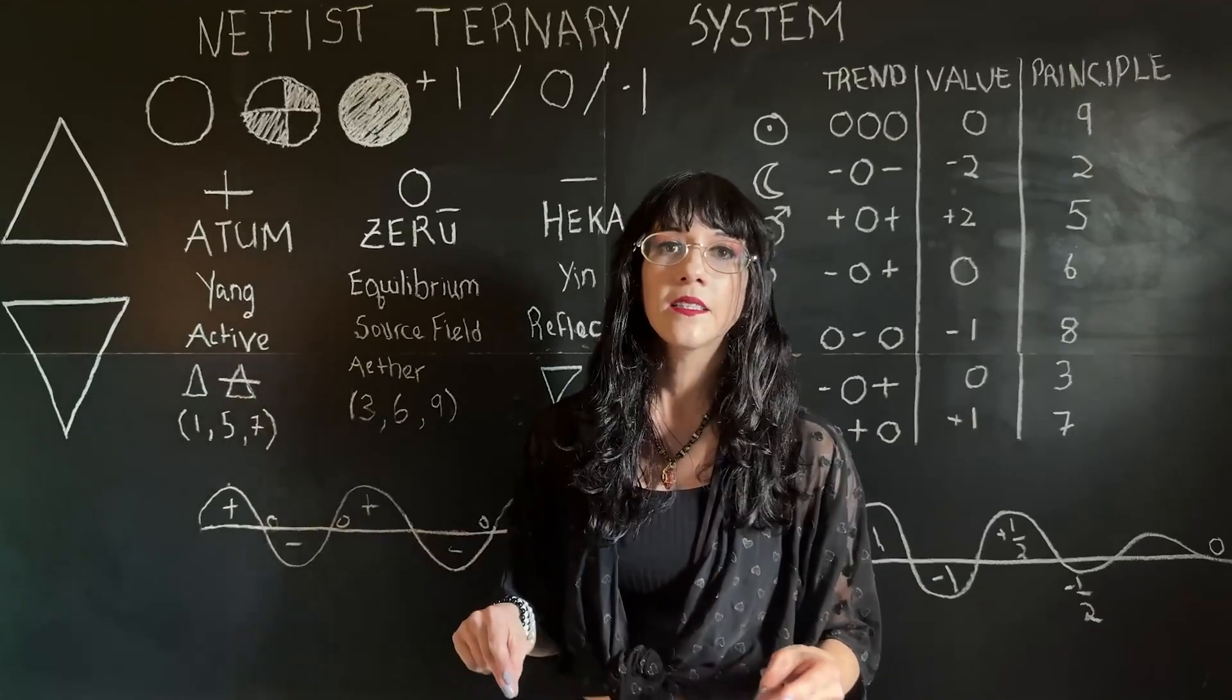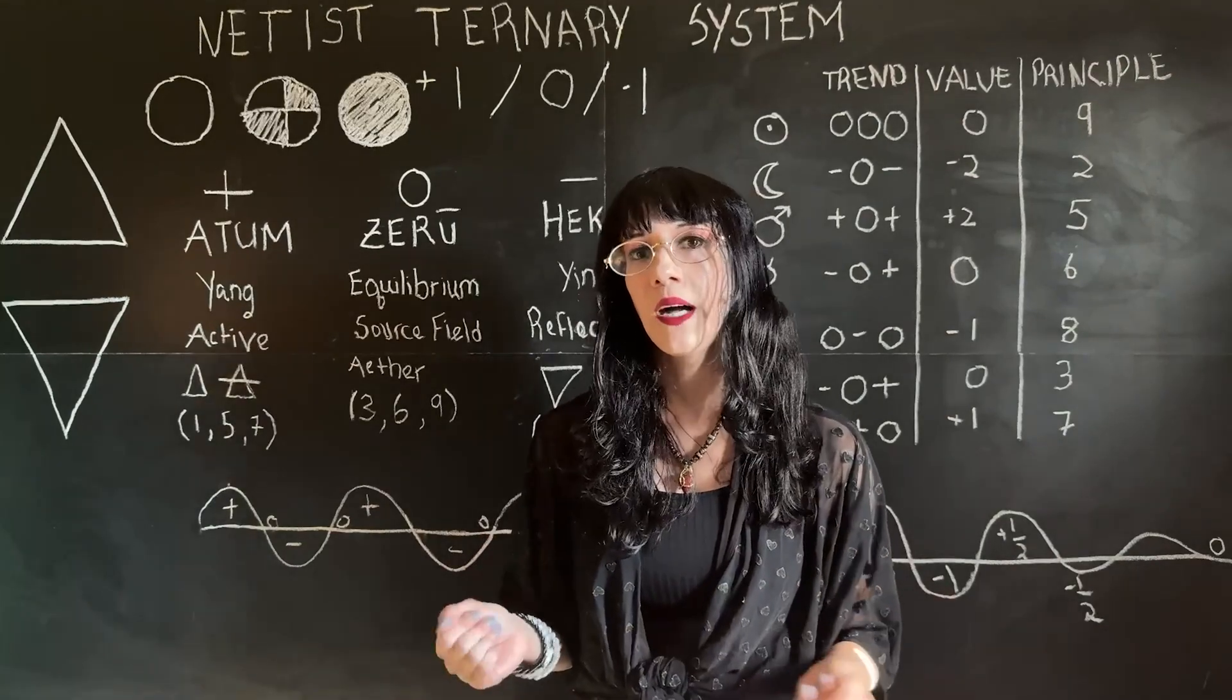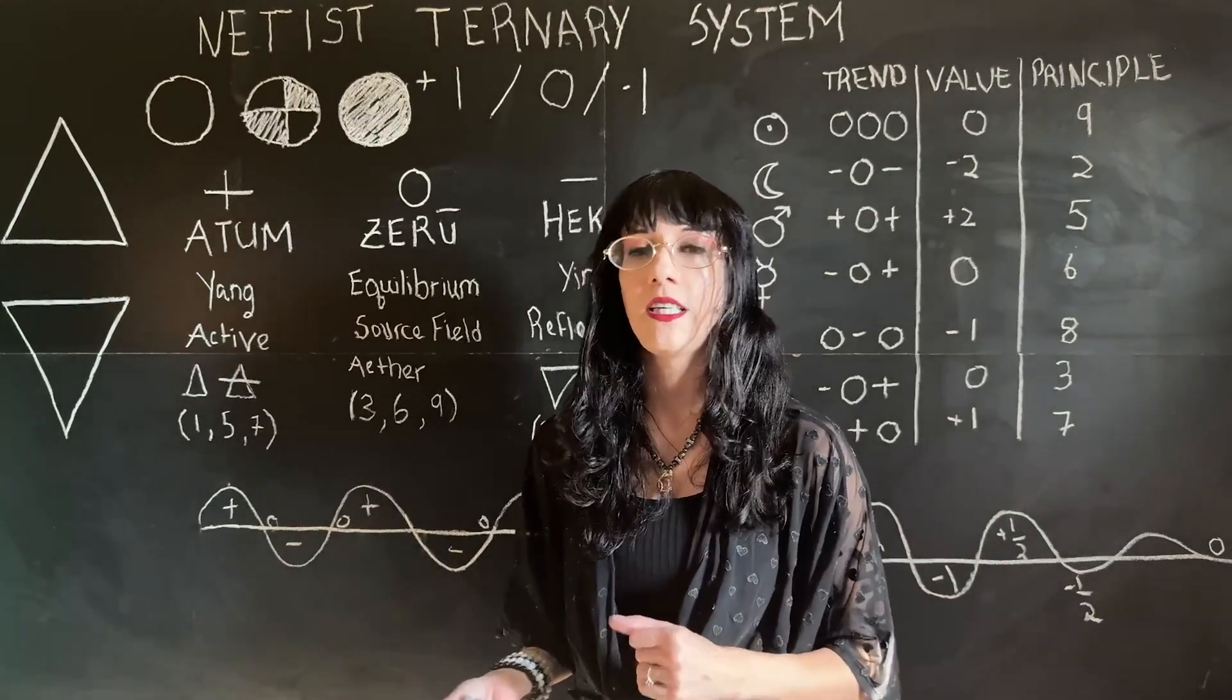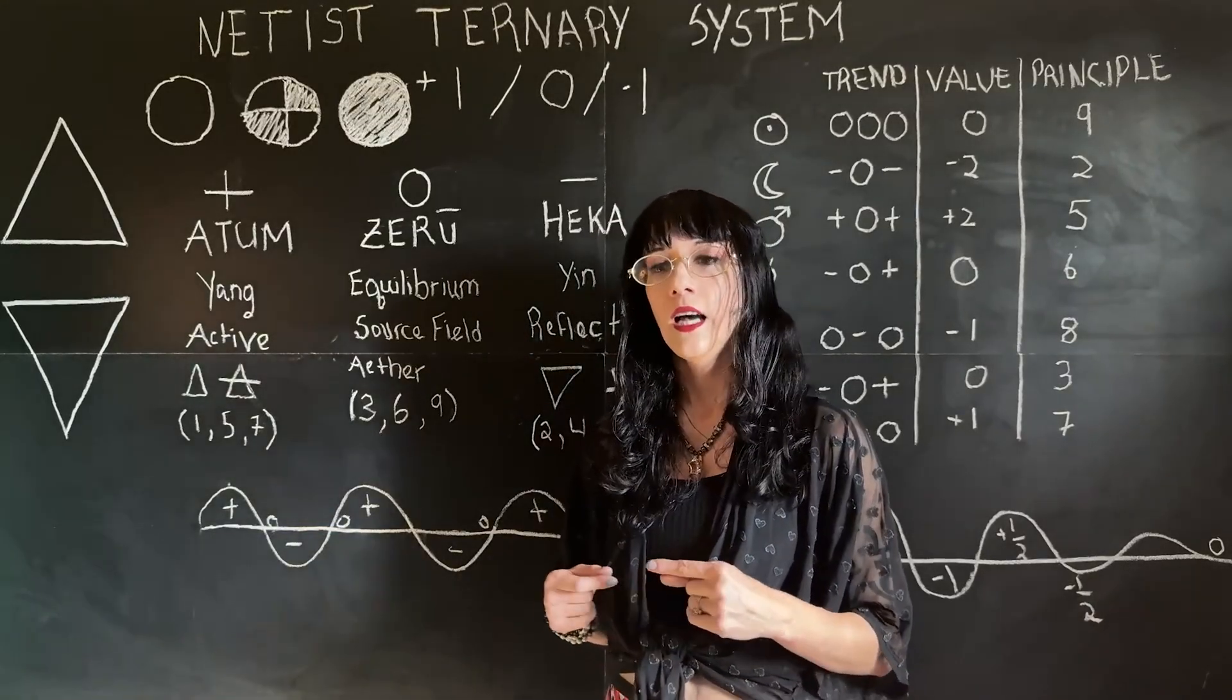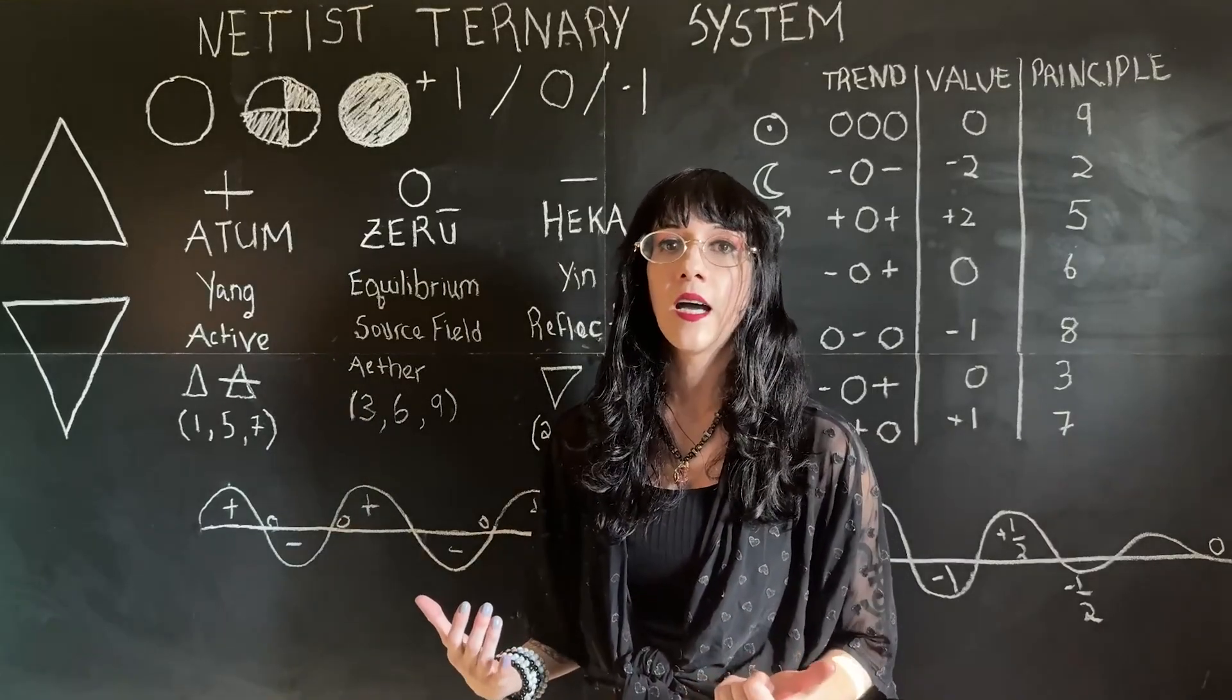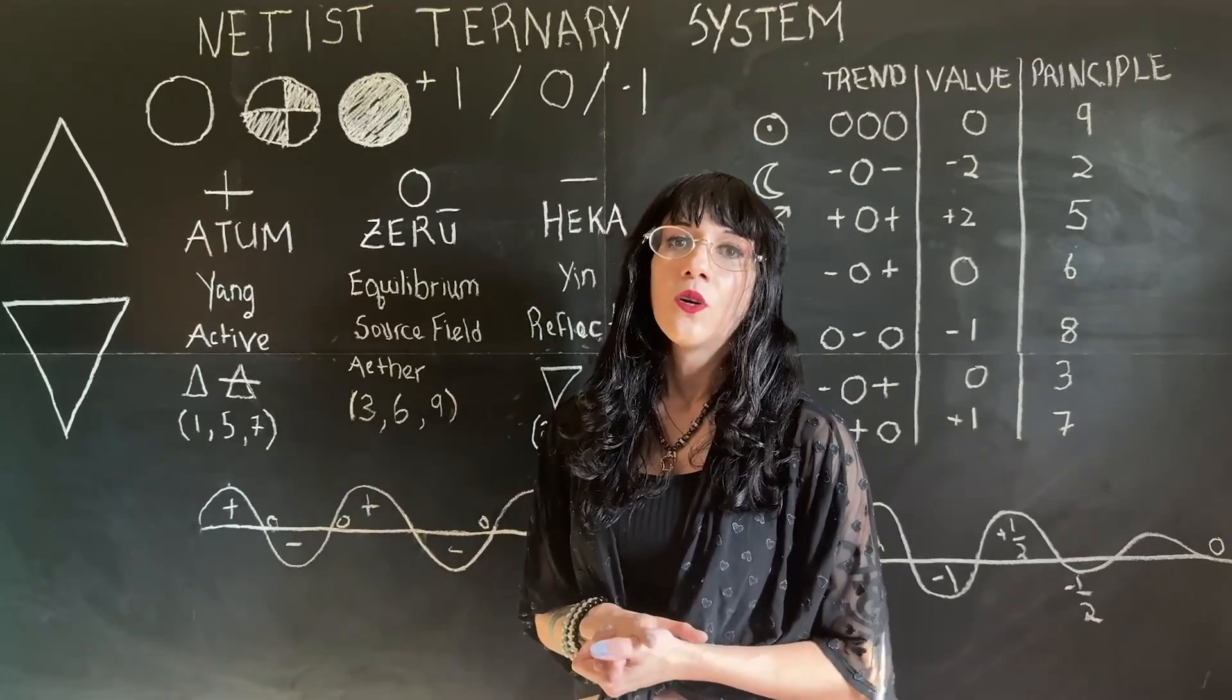And binary systems can't do cumulative tracking. You can take an average, but within the ternary system, because there's that negative to even things out, we can use cumulative tracking. So we can track a record for a long period of time and come up with a sum that gives us a trend of any set amount of time.